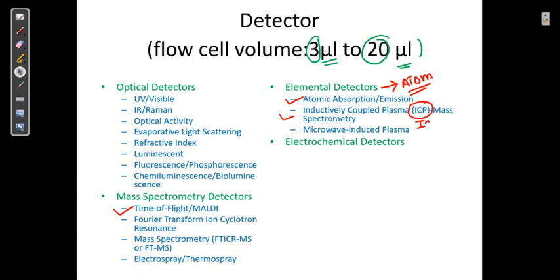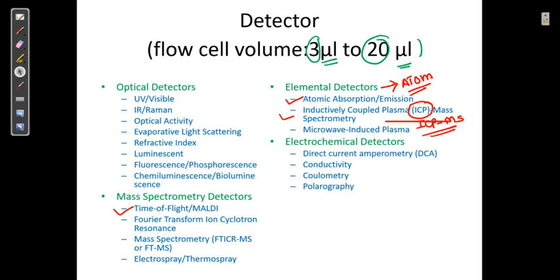We also have microwave induced plasma. In case of electrochemical detectors, we have direct current amperometry, conductivity, coulometry, and polarography.